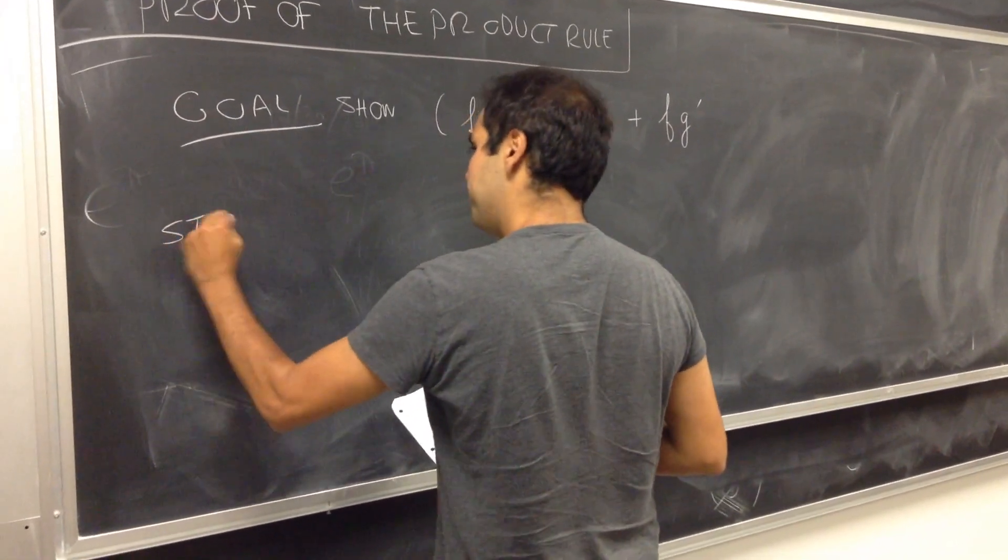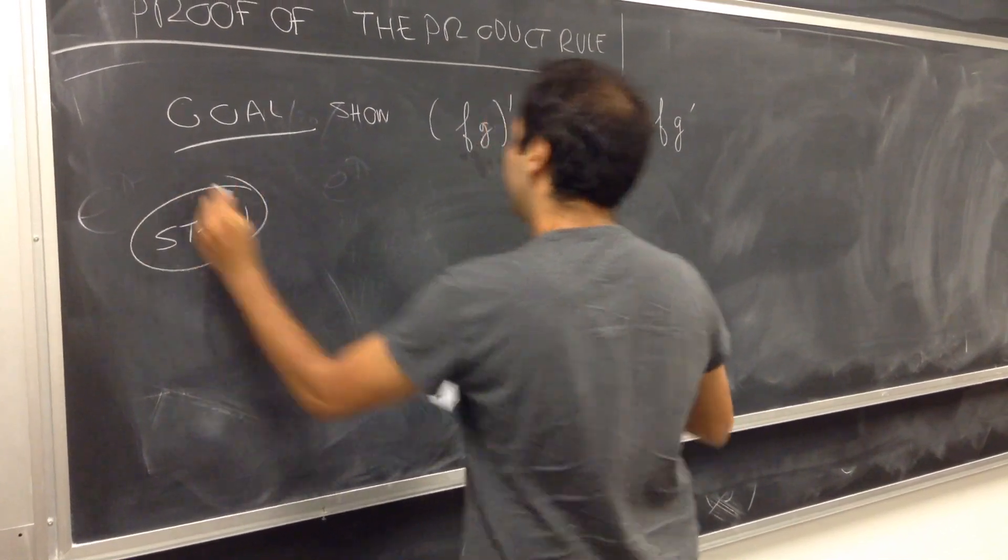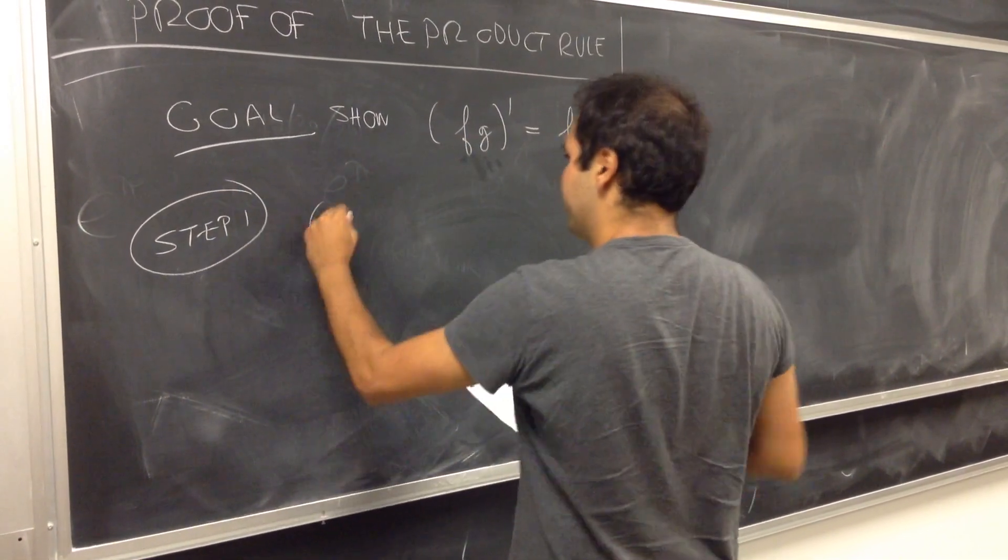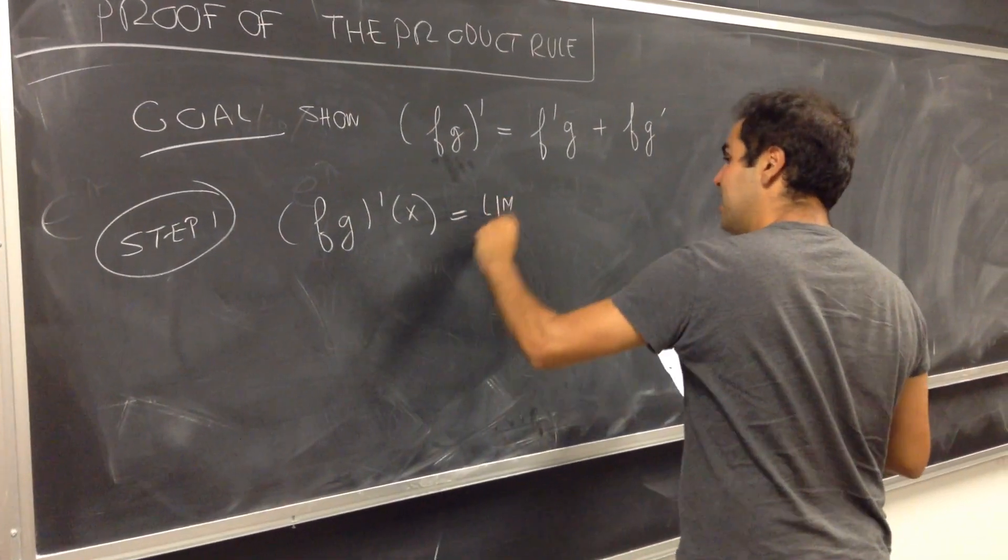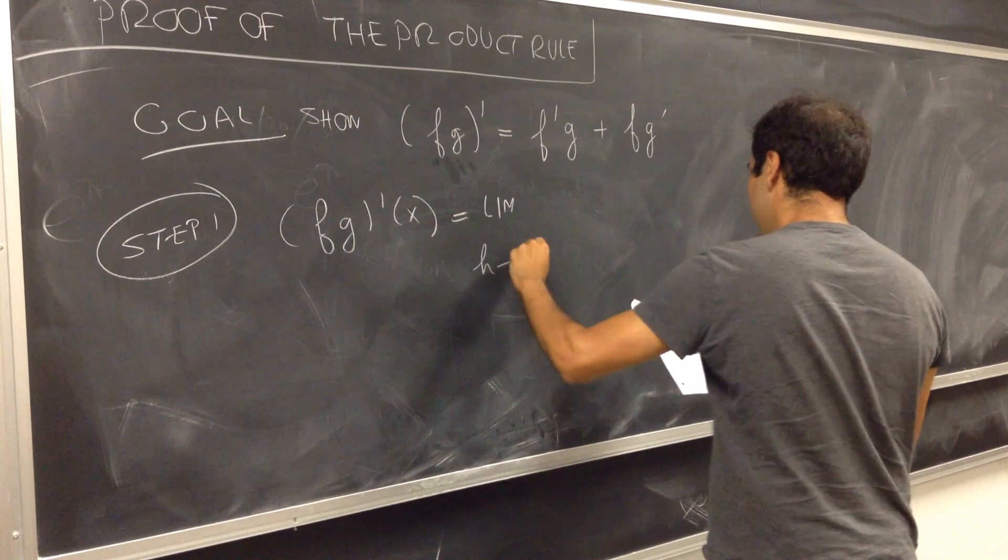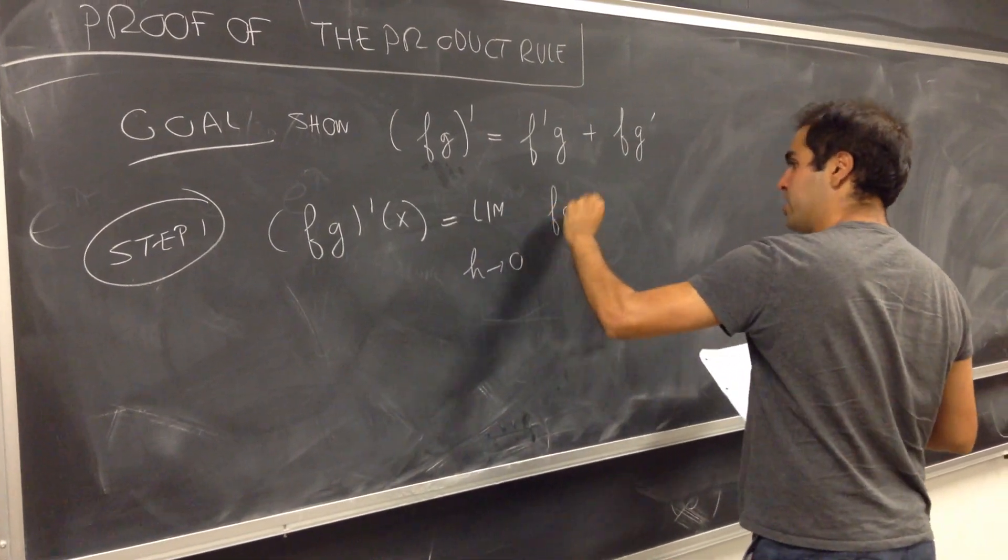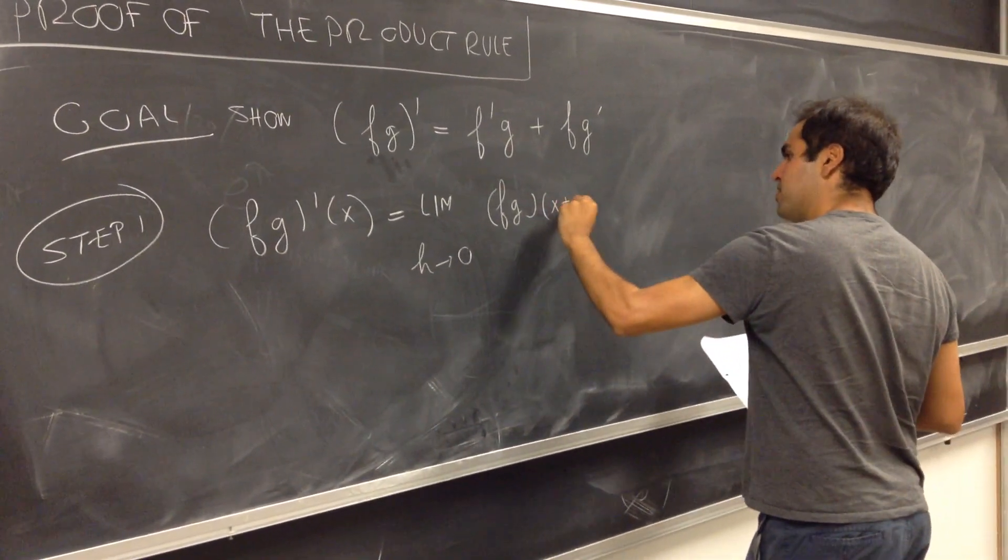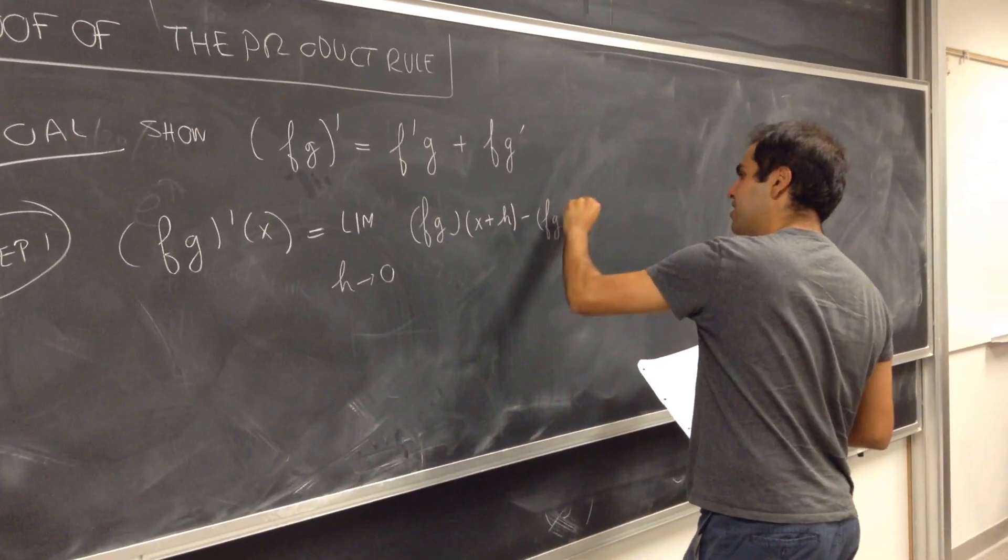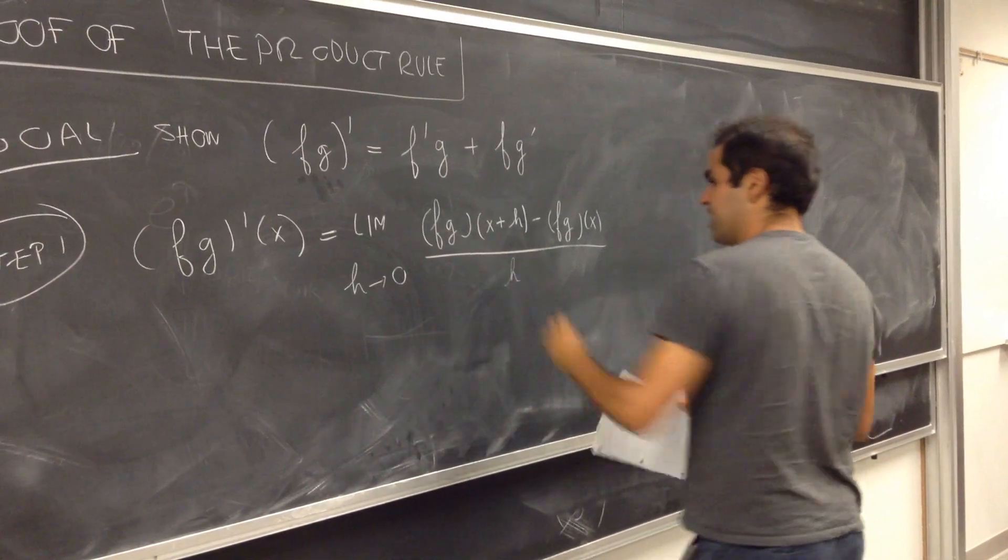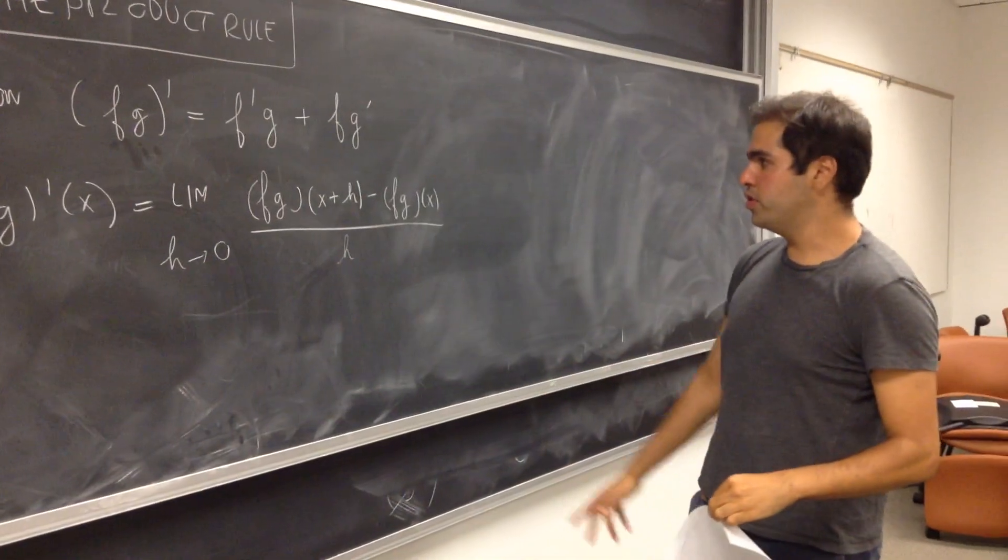So step one: what does it mean for this to be the derivative? Well, (fg)' of x, by definition, is the limit as h goes to 0 of this function evaluated at x plus h minus this function evaluated at x, divided by h. So difference quotients.